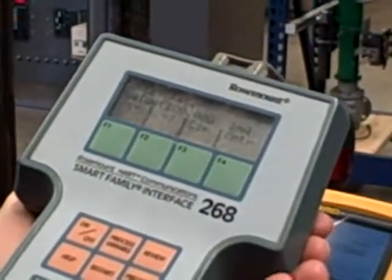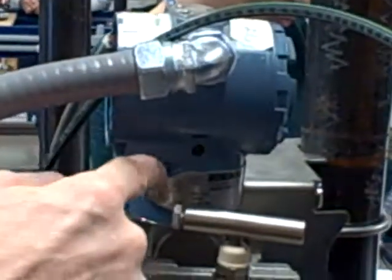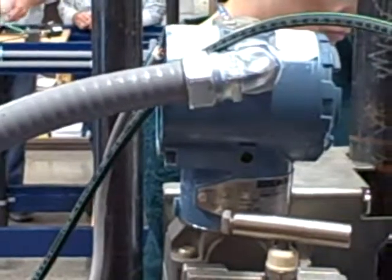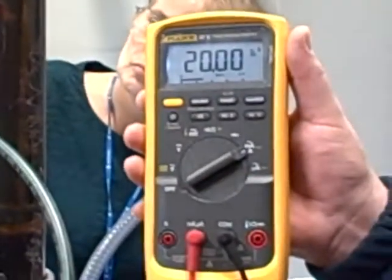But you could understand, if the D-to-A converter, the digital to analog converter, inside this transmitter were off for some reason, like a resistor value drifting or something, if the microprocessor tries to output 20 milliamps, it may not actually output 20 milliamps. Okay, I see why you did this first.